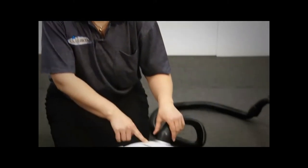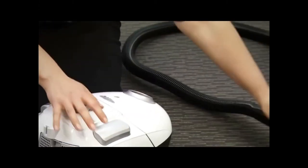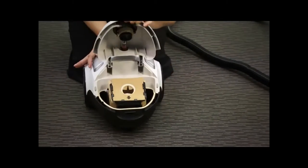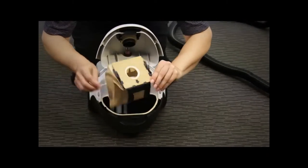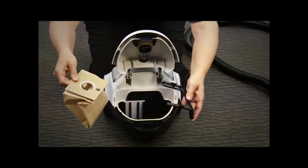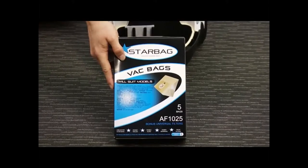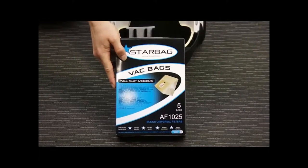When the bag indicator tells you your bag's full, best to change it. Take the hose out and open the unit up. There you'll find the bag. It just slides out nicely from the bag holder. For a replacement bag, use the AF1025 bags.